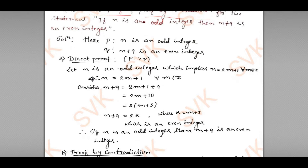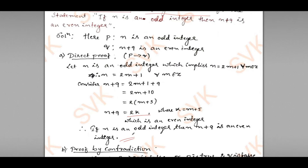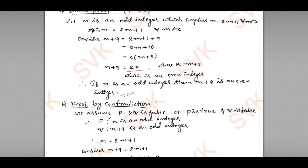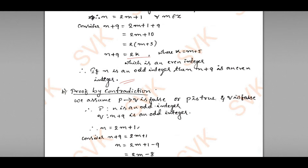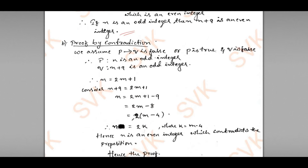By direct proof we are going to prove that n+9 is even. By the contradiction part I have considered p and q, so n will be 2m+1. Considering that, I am going to show that n is even, which contradicts the given statement. Therefore, by proof by contradiction, the proof ends here.